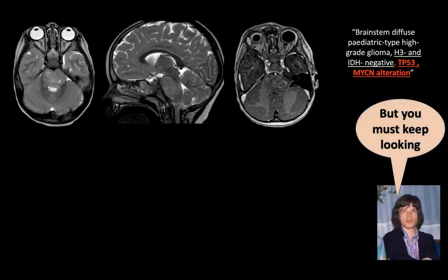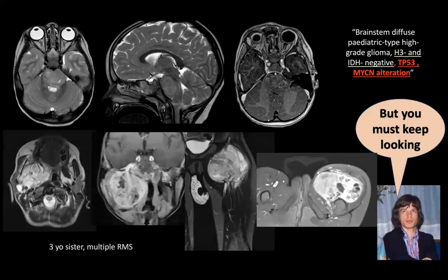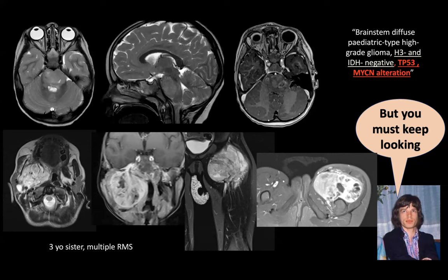You must keep looking because something is off. The sister has multiple rhabdomyosarcomas in the head and neck region, but also in the legs. Sarcomas are one of the most important tumors in a specific cancer predisposition syndrome — Li-Fraumeni — which explains why this pontine glioma is not the typical DIPG or pontine DMG, because it does not have the histone mutation. We cannot treat it differently today, but in the future these molecular differences may have a lot of impact on treatment.